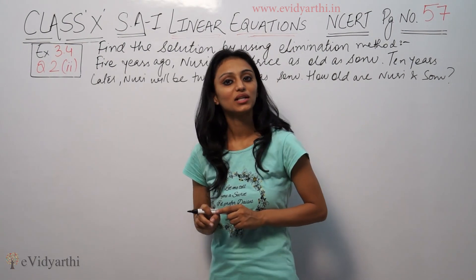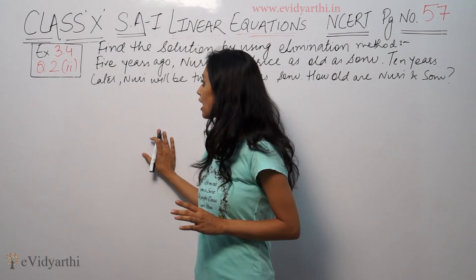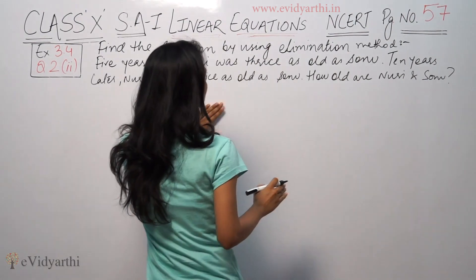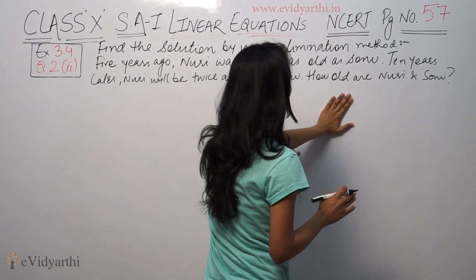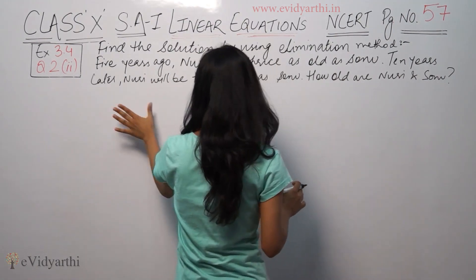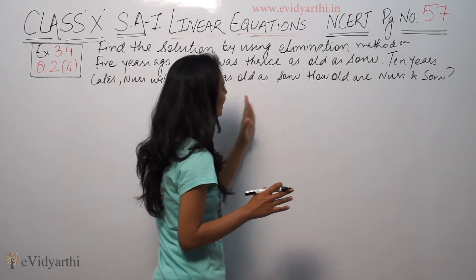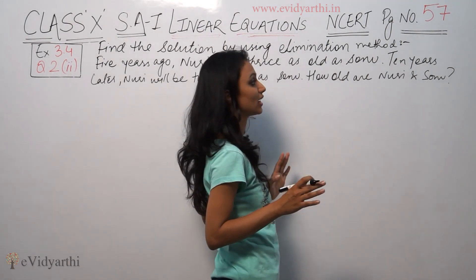5 years ago, mother was 3 times as old as son. 10 years later, mother will be 5 times as old as son. How old are mother and son?